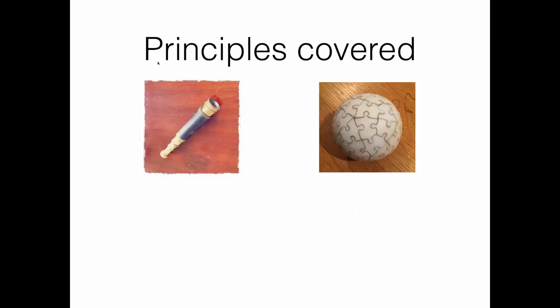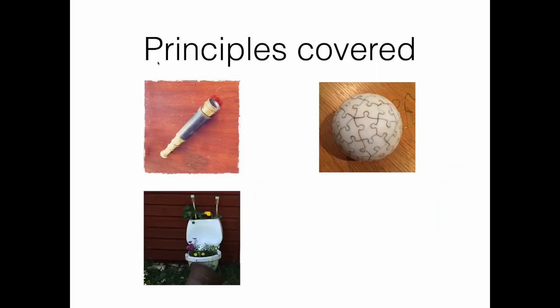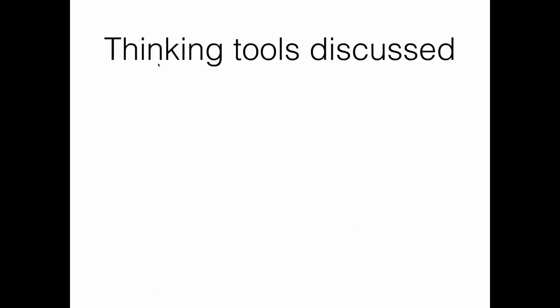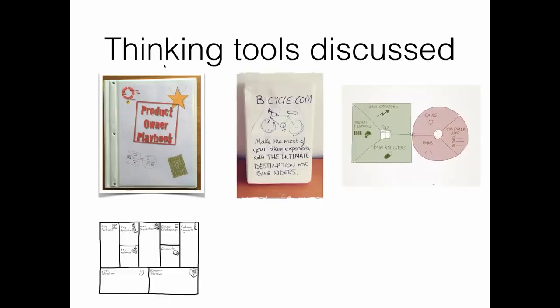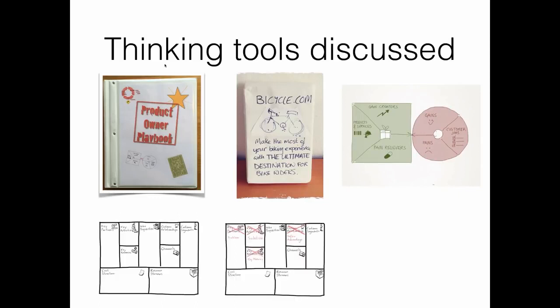The key principles covered are product discovery, the ready state, the done state, and getting early feedback. The thinking tools discussed are: the Product Owner Playbook, Product Vision, Value Proposition Canvas, Business Model Canvas, Lean Canvas, and Lean Startup. But tools may not be the only thing you need — remember the Agile Manifesto values: individuals and interaction over processes and tools.